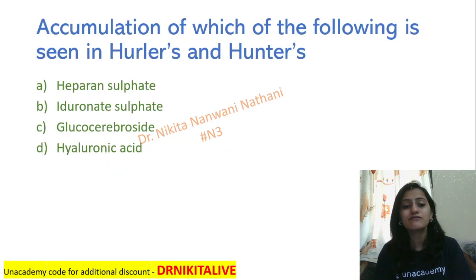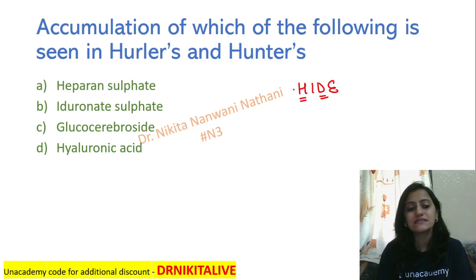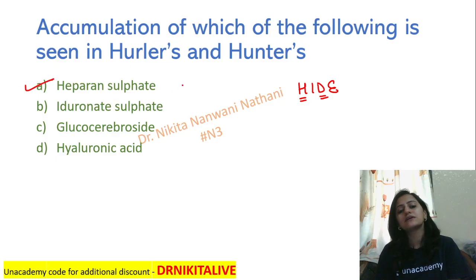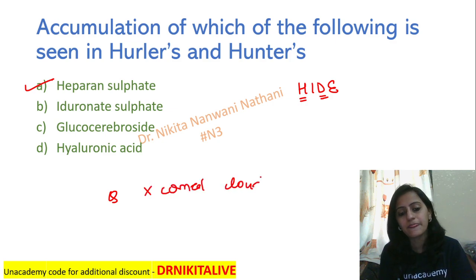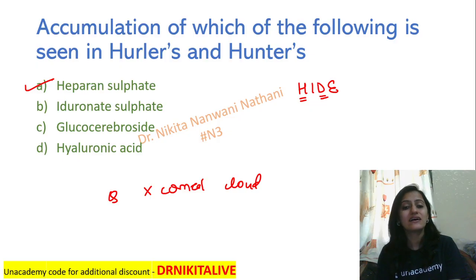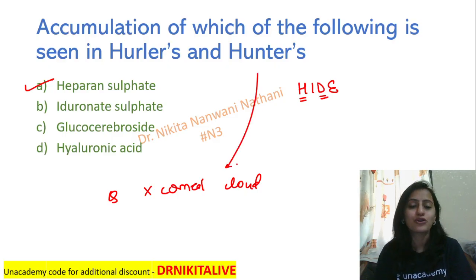Next question: accumulation of which of the following is seen in Hurler's and Hunter's? Remember HIDE — heparin sulfate and dermatan sulfate accumulate in Hurler's and Hunter's. Another important point: Hunter's does not have corneal clouding. Imagine a hunter hunting with an axe — the hunter requires very good vision to hunt for the animal, so Hunter's should not have corneal clouding. Remember, Hunter's does not have corneal clouding.